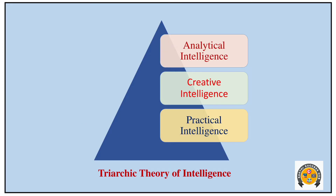In the diagram, there is the Triarchic Theory. Tri means 3. There are 3 intelligences: analytic intelligence, creative intelligence, and practical intelligence.